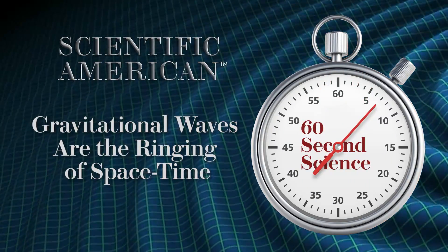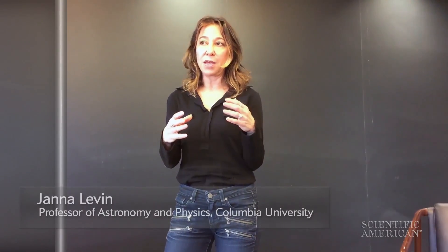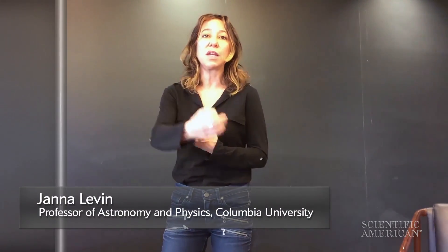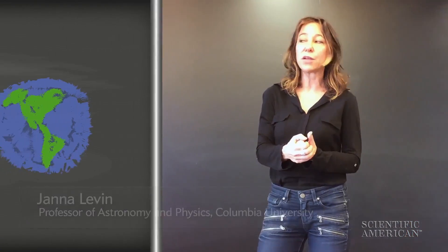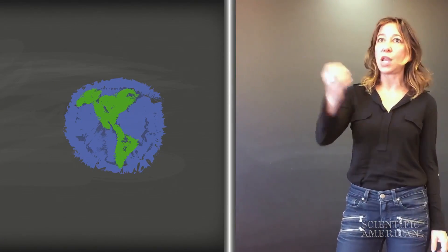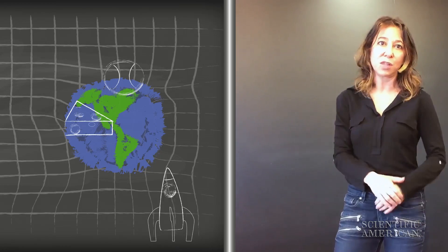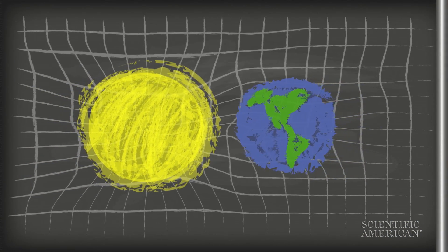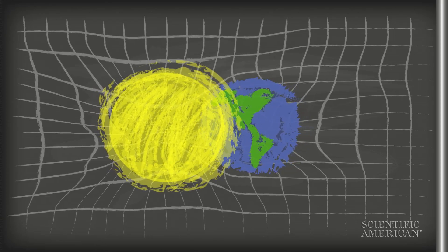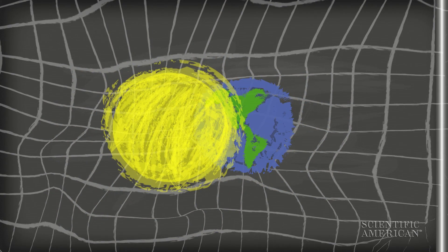Gravitational waves are curves in the shape of space-time that propagate and carry energy. One way to think about space-time is the curves that things fall along around an object. I could paint the shape of space-time by dropping things around the Earth and watching them fall. If the Earth were to move around and collide with the Sun, those curves have to change with them, and it creates a wave, like a wave in water — and those are the gravitational waves.